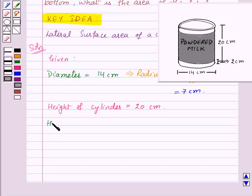So we will find the height of the label. The label is 2 centimeters less from the top and 2 centimeters less from the bottom, so we will subtract 2 plus 2 centimeters from the total height of the cylinder.